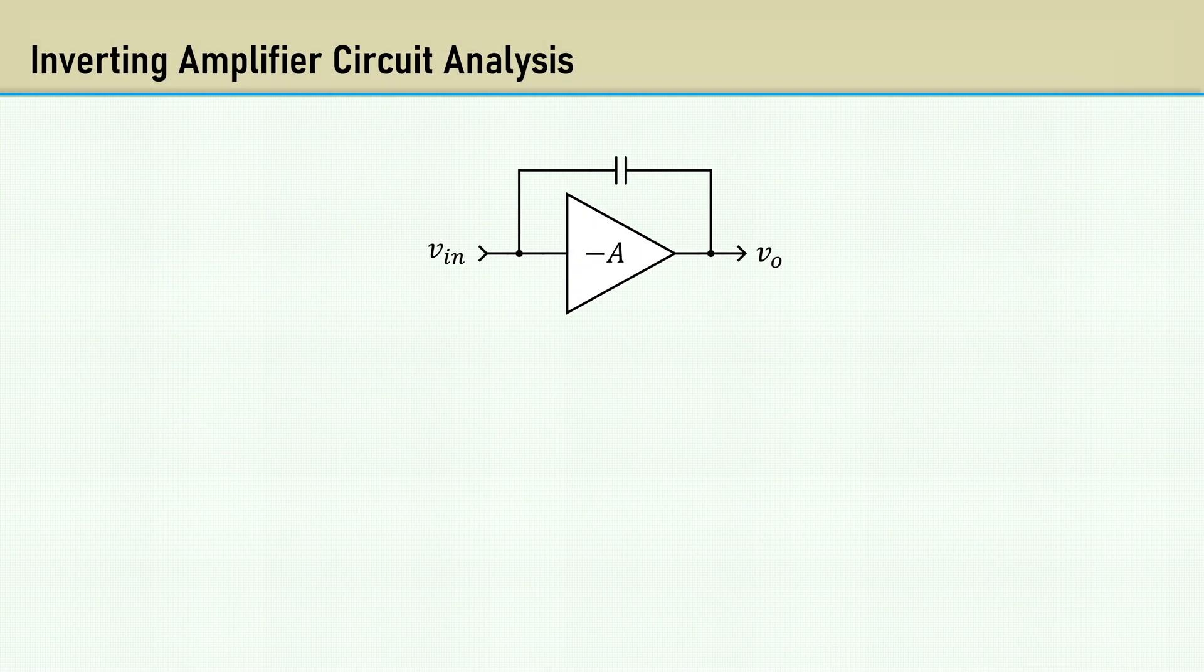Now let's derive the Miller capacitance equation using circuit analysis of an inverting amplifier with parasitic capacitance between the output and the input. Let's come up with an expression for input current from the ideal amplifier abstraction. The current going into the input is zero. Therefore, the current in the capacitor is equal to the input current.